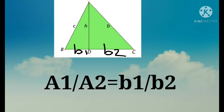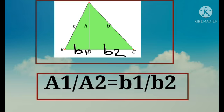Therefore, if the base, height and area of one triangle is denoted by B1, H and A1 respectively, and that of the other triangle is denoted by B2, H and A2 respectively, then A1 upon A2 will be equal to B1 upon B2. This is our second property.